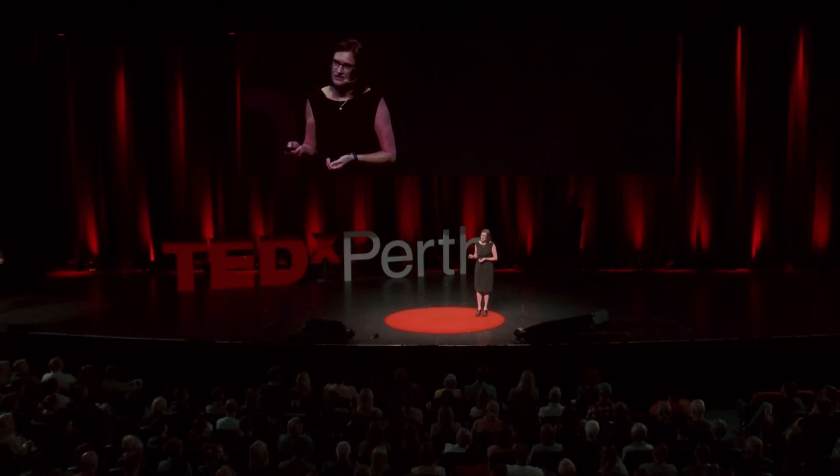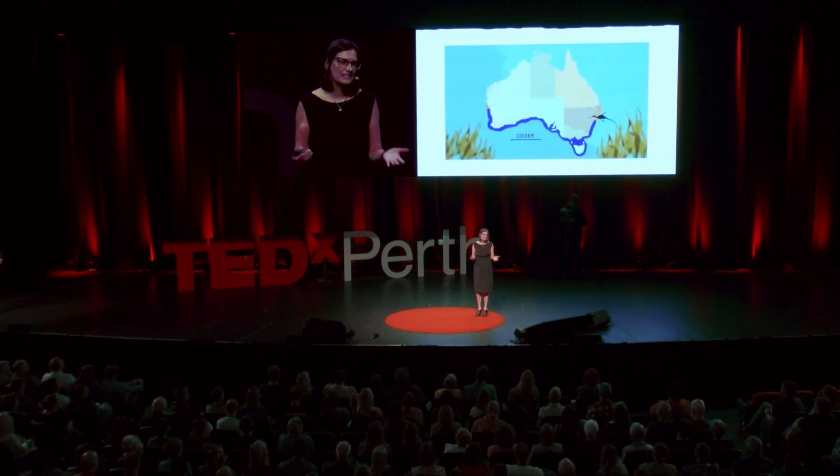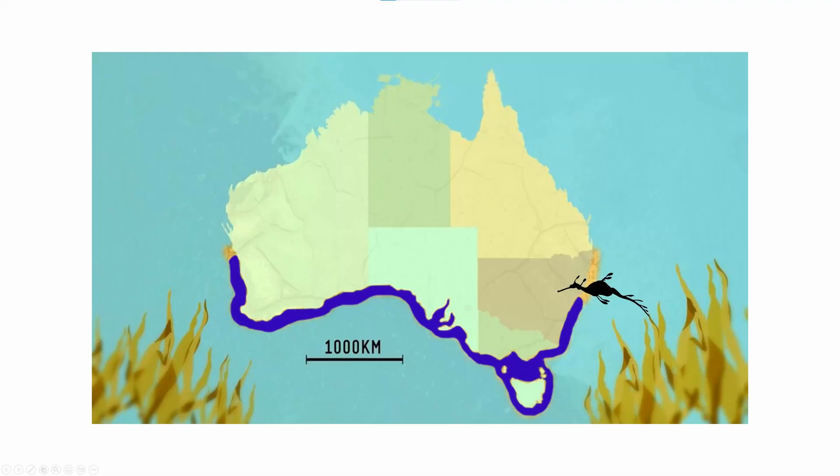The distribution of the most widespread species, which is the common or weedy sea dragon, matches the length of the newly recognised Great Southern Reef. This important ecosystem covers more than 8,000 kilometres of Australia's temperate coastline, and it's under direct threat from climate change, development and pollution.